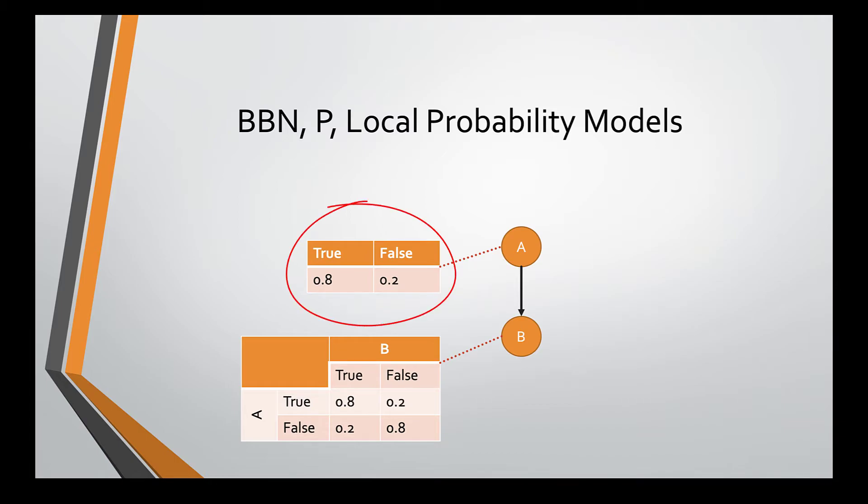Since A does not have any parents, its local probability model is a probability table which specifies the probability of its states. The value in these cells are simply probabilities. Note how they sum to 1. B has A as its parent. As such, its local probability model is a conditional probability table. We have to specify the probabilities of B as true or false when A is true. We also have to specify the probabilities of B as true or false when A is false. This time, the values in this table represent conditional probabilities. Across each row in the table, the values sum to 1.